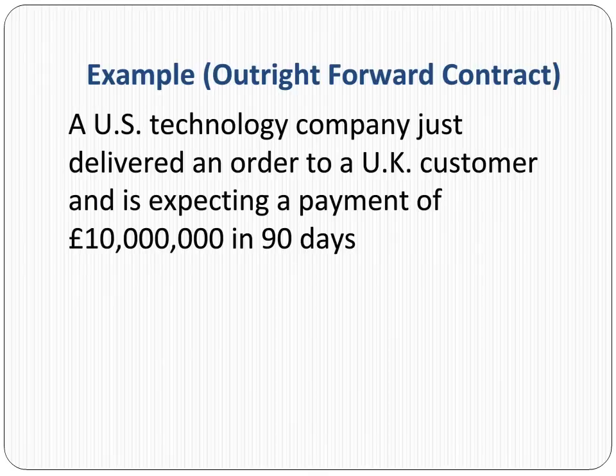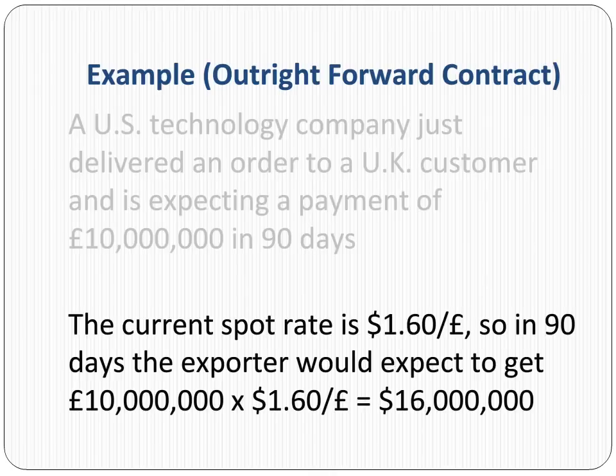Let's consider a US technology company that just delivered an order to a UK customer and is expecting a payment of 10 million British pounds in 90 days. Let's assume that the current spot rate is $1.60 per pound. So in 90 days, the exporter would expect to get $16 million US dollars at the current spot rate.